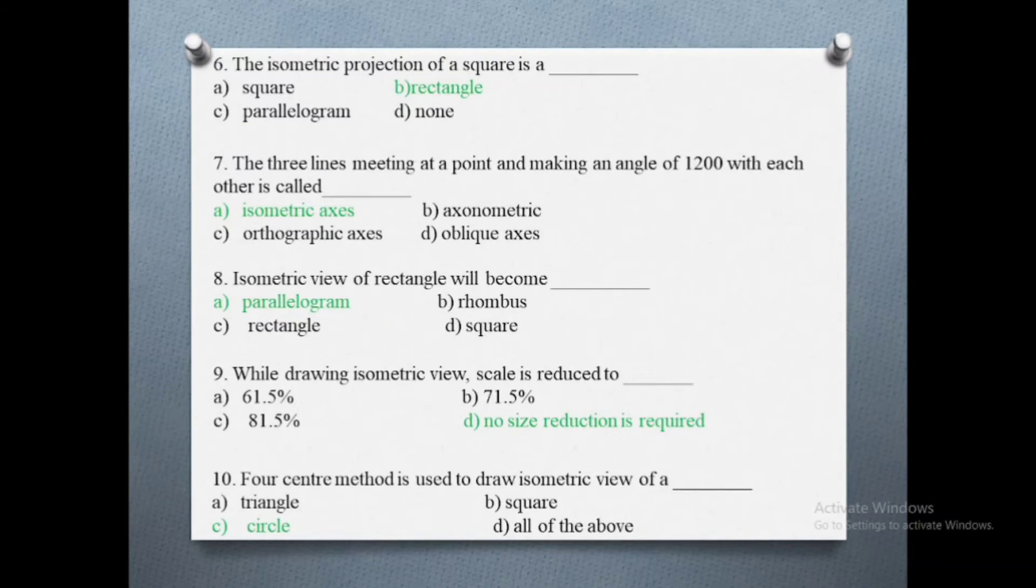Seventh question: the three lines meeting at a point and making an angle of 120 degrees with each other is called. Options are: a) isometric axis, b) axonometric, c) orthographic axes, d) oblique axes. The correct answer is isometric axis.